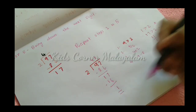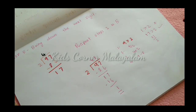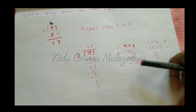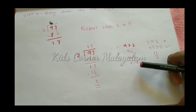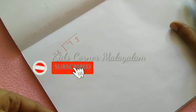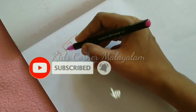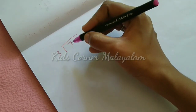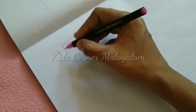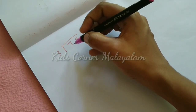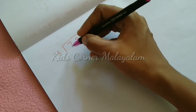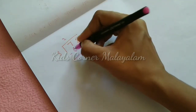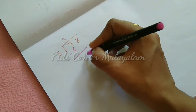Now we compare: 7 is greater than 3. Then we divide: 7 divided by 3 is 2. Two 3s are 6. Subtract: 7 minus 6 is 1. Bring down the next digit.